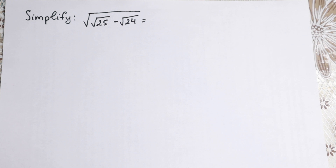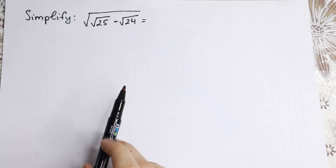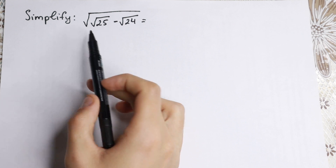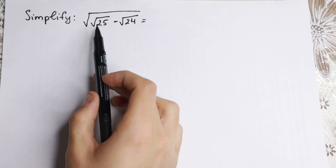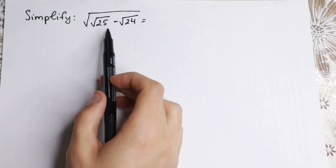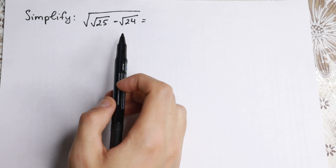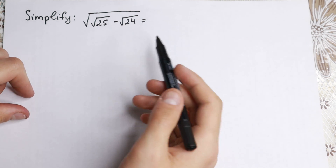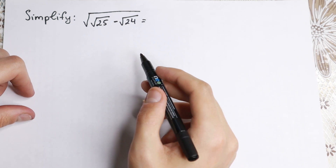Hello everyone, welcome back to higher mathematics, happy to see you here. Really interesting problem today — we need to simplify this expression. We have square root, we have a subtraction: we have square root of 25 minus square root of 24, and we need to find our answer.